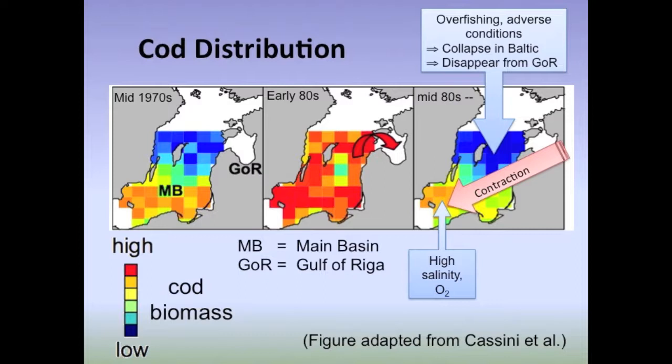Conditions do not favor the cod source forever. In the mid-1980s, the Baltic Sea witnesses adverse conditions, and the cod population starts collapsing everywhere except for the southern region. That means that the gulf population can no longer be supported by migrants from the main basin.